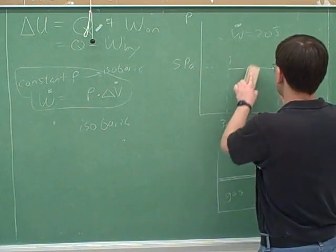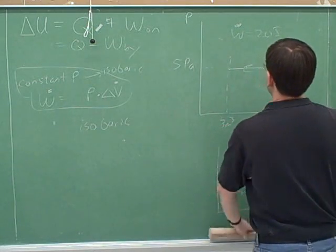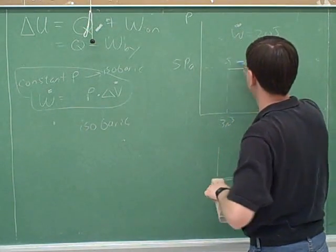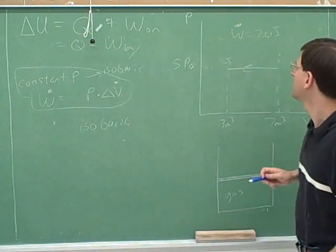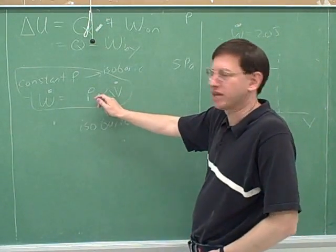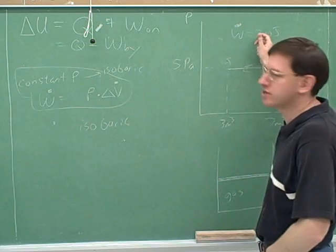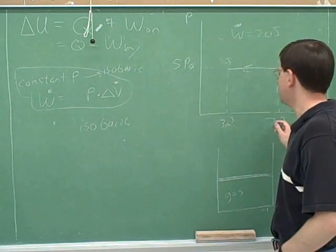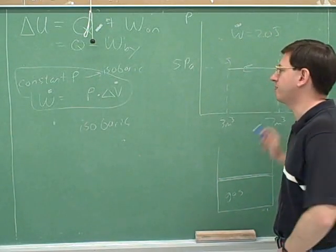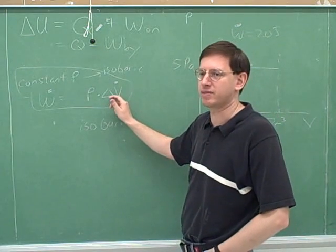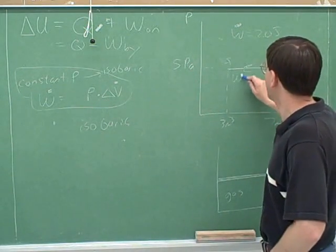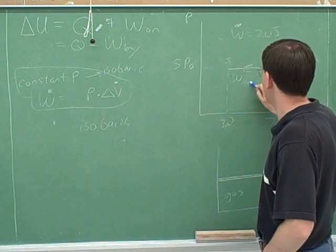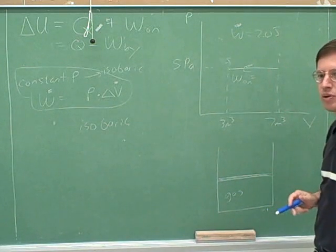Or maybe I should have done it this way. So let's say we're going from here to here. So I would start by using this equation here. And I would say the magnitude is 20 joules. So even though the V is decreasing, delta V is technically negative 4. I'm just going to plug in positive 4 here because I'm just trying to get the magnitude. And then, what's the work that is done on this gas, positive 20 or negative 20?